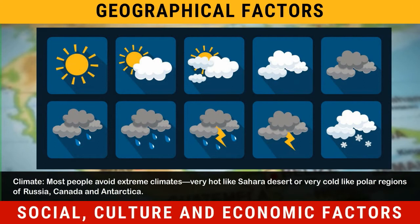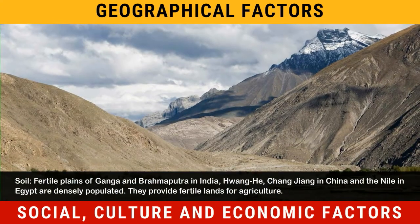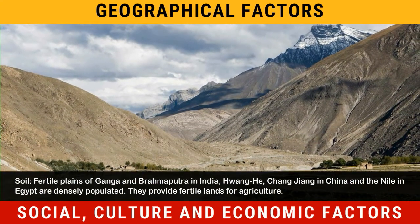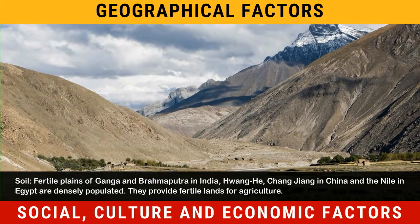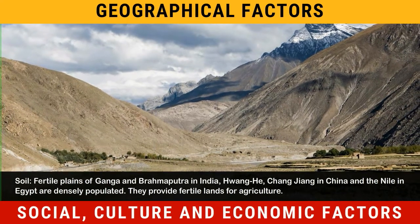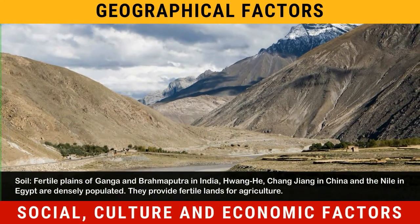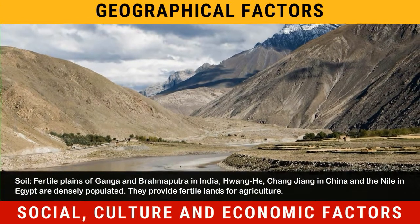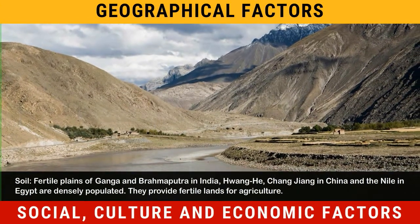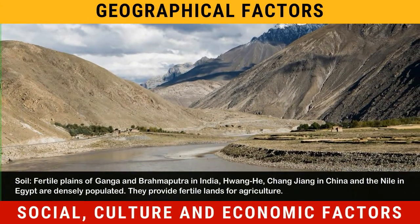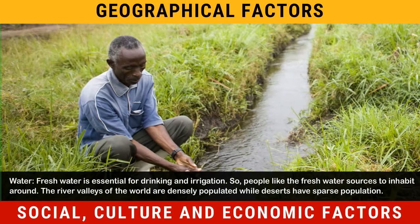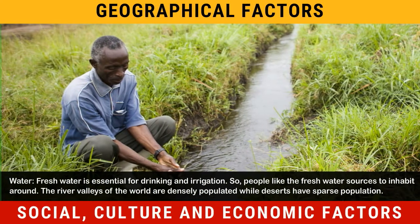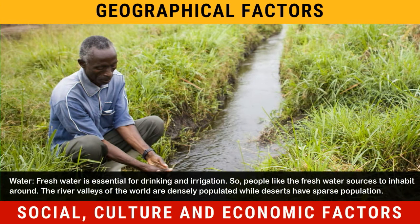Soil: Fertile plains of the Ganga and Brahmaputra in India, Huanghe and Changjiang in China, and the Nile in Egypt are densely populated. They provide fertile lands for agriculture.